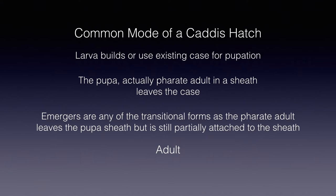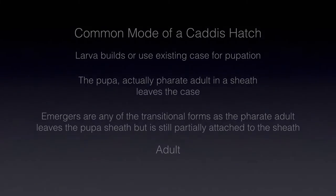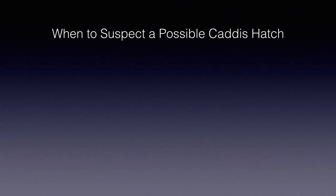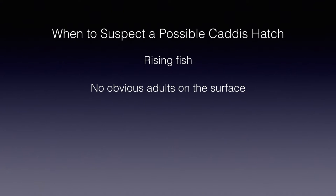The pupa will drift for a period of time before finishing the splitting of the pupa sheath and emerging as an adult on the surface. The adult may float briefly on the surface, but most adults fly away quickly, often in just seconds. Occasionally a caddis hatch may be quite obvious, but since the adult flies away quickly, more commonly you'll see rising fish and wonder what they're taking. The caddis rise forms are usually much more aggressive than the sipping that trout make when taking midges or spinners.